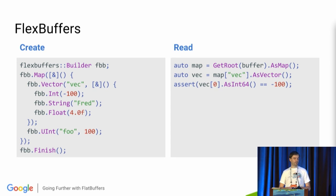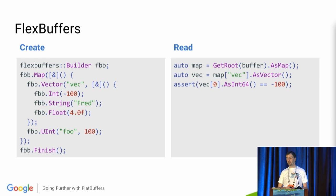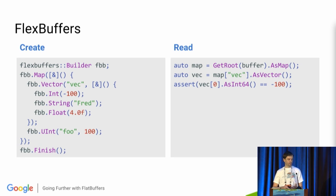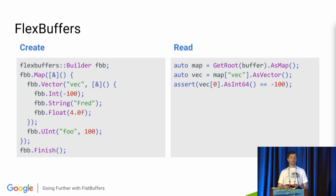You can nest FlexBuffers inside FlatBuffers, so you can choose the most appropriate data representation for all your data. On this slide we have an example of creating a FlexBuffer on the fly without a schema and without having to create any data structures first. There's also a version that doesn't use lambdas. You can then read directly from the buffer with random access and no memory allocation whatsoever.